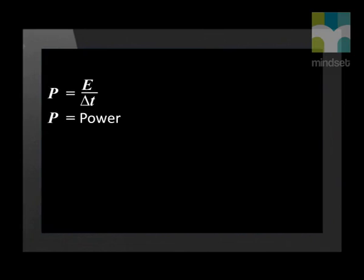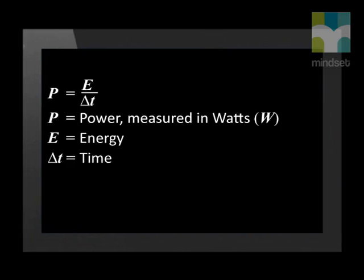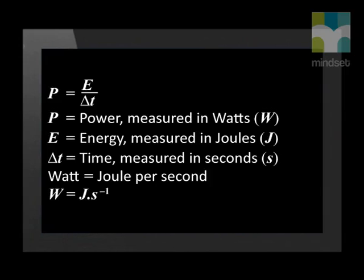Power is represented by the letter P. Mathematically, power equals E divided by delta T, where E stands for the energy, and delta T the change in time over which the energy was converted. Power is measured in watts with the symbol W. Energy is measured in joules with the symbol J, and time is measured in seconds with the symbol S. We can therefore see that the watt is joules per second.